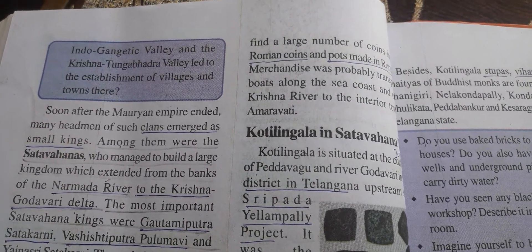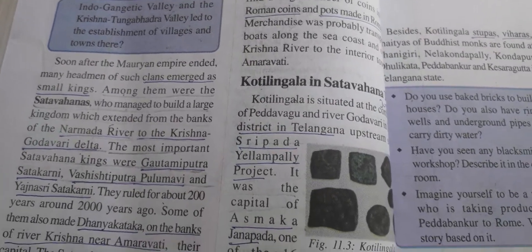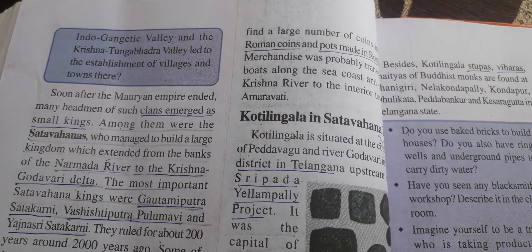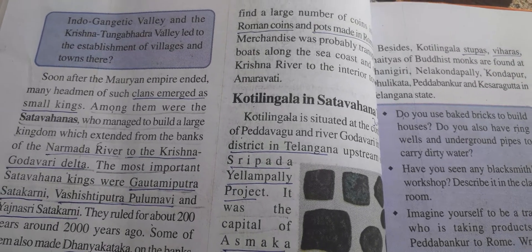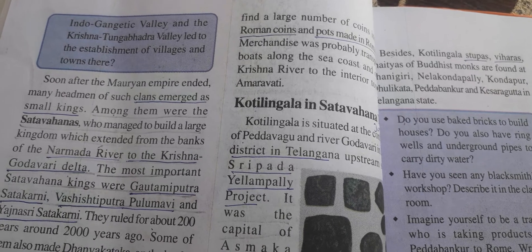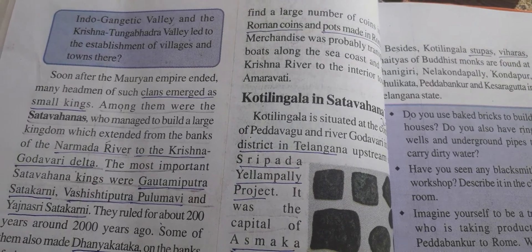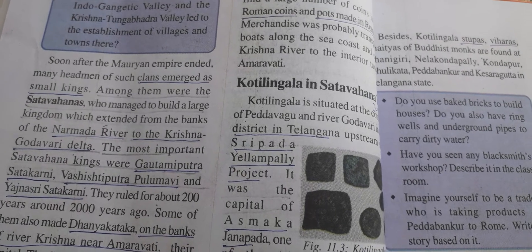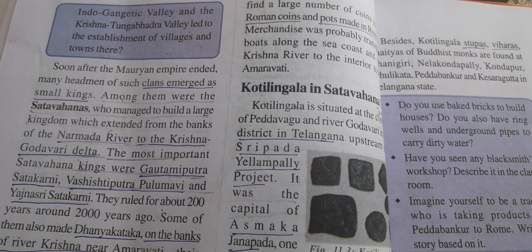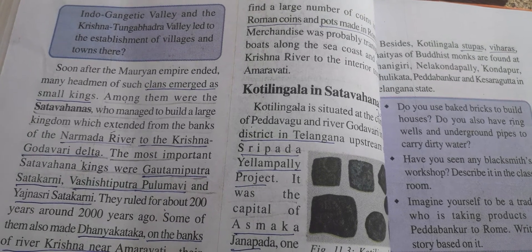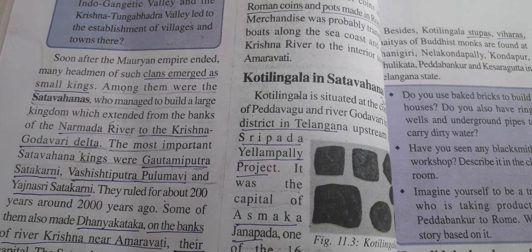After the Mauryan Empire became weak, these clan headmen became the small kings of those areas. Out of those people, the Satavahanas managed to build a large kingdom which extended from the banks of the Narmada river to the Krishna-Godavari delta. So after the Mauryans, in the Deccan area, the Satavahanas became the kings or emperors. The most important Satavahana kings were Gautami Putra Satakarni, Vasishta Putra Pulamavi, and Ajna Sri Satakarni.